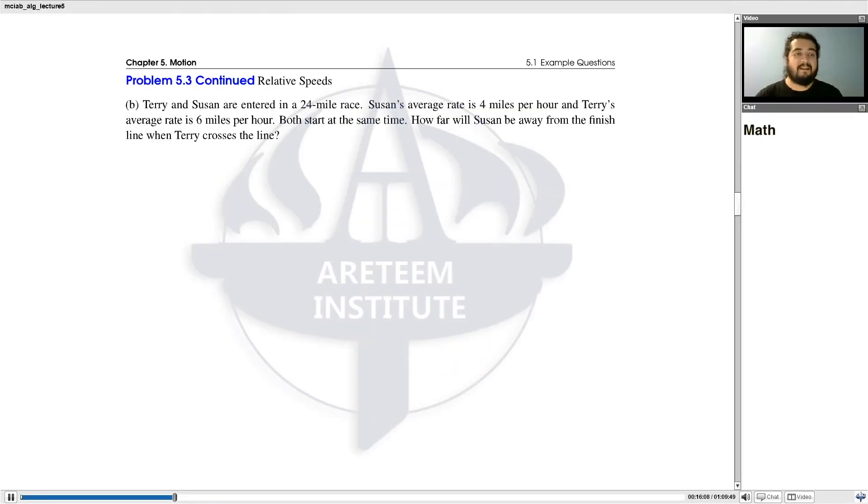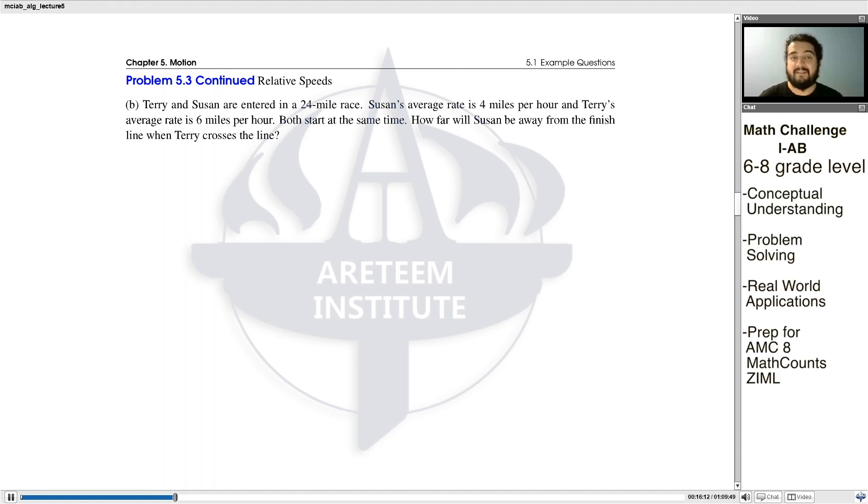Now, we have Terry and Susan. They entered a 24-mile race. Susan's average rate is 4 miles per hour, and Terry's average rate is 6 miles per hour, and they both start running at the same time. The question is, how far will Susan be away from the finish line when Terry crosses the line?